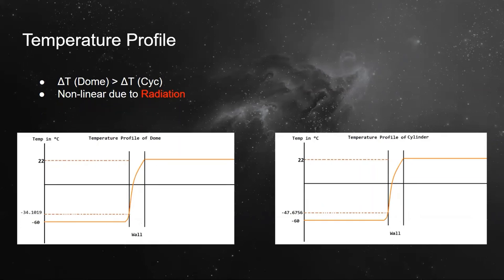From the figure it can be seen that the temperature difference in the boundary layer is more in the case of dome as compared to that of cylindrical region. This is due to different value of heat transfer coefficient for both. The presence of radiation also increases this difference in both cases.